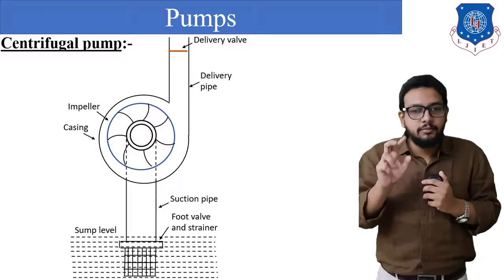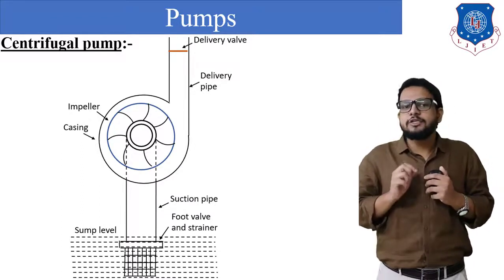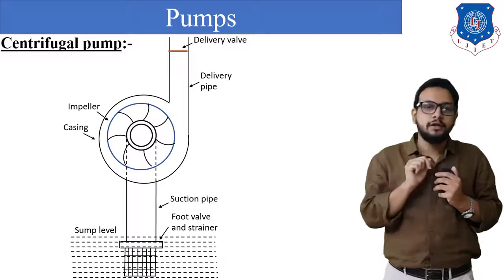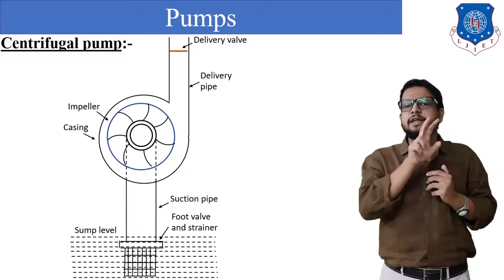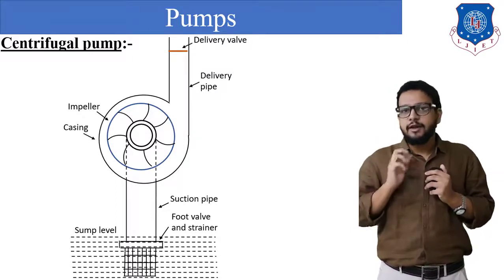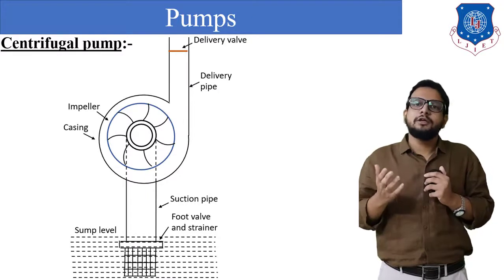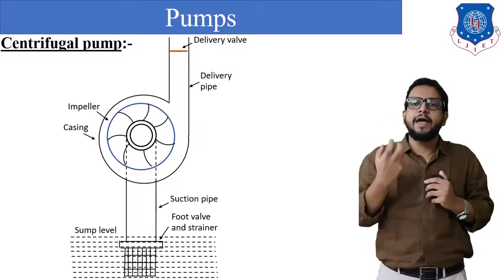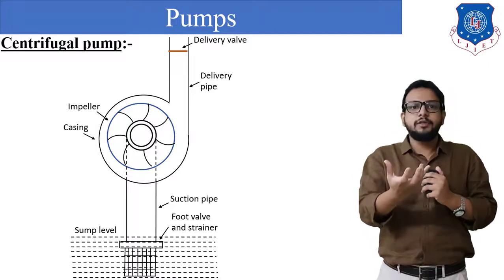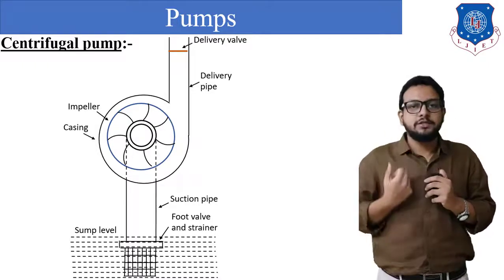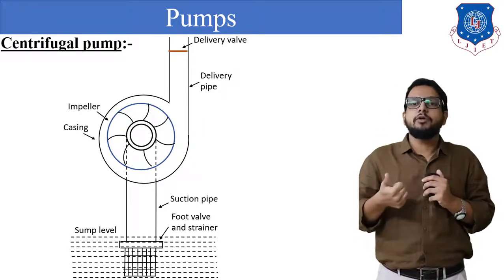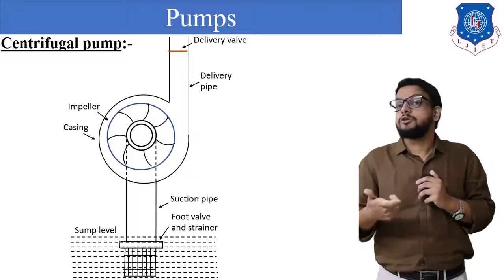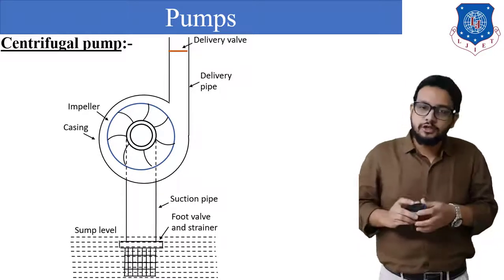On the top side, a delivery valve is provided on the delivery pipe. The arrangement of the impeller and casing is eccentric — the area between the impeller circle and the casing circle increases gradually. Because of this increment in area, we obtain a reduction in velocity, and once velocity is reduced, pressure energy increases. The function of the pump is to exert pressure energy on the liquid. The pump operates on the continuity equation and Bernoulli's equation — that is, the law of conservation of mass and law of conservation of energy.